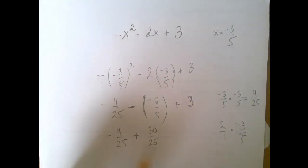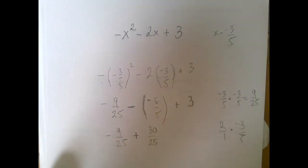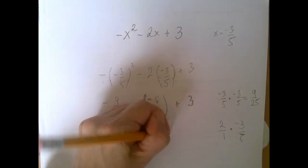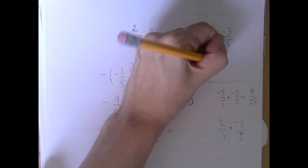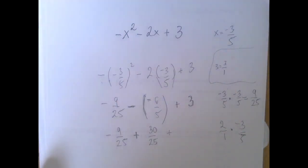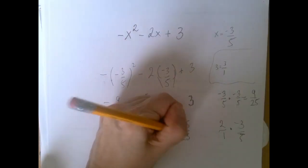Now, maybe these two cancel out and become nice, but we can actually prepare for the worst and bring 3 to the common denominator as well. 3 is the same as 3 over 1. And then for a denominator of 25 means we have to multiply both upstairs and downstairs by 25. And 3 times 25 is 75.